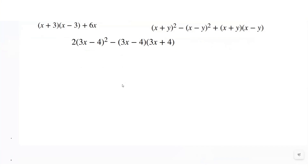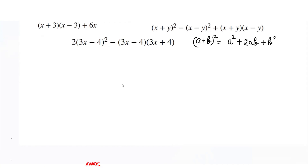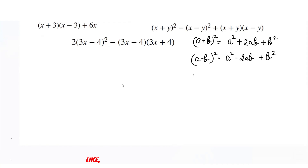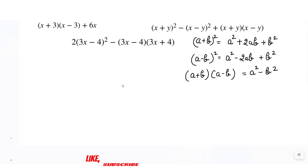Hello everyone, let's understand how to expand algebraic expressions and simplify them. We will use the following formulas: a plus b whole square equals a squared plus 2ab plus b squared; a minus b whole square equals a squared minus 2ab plus b squared; and a plus b into a minus b equals a squared minus b squared.